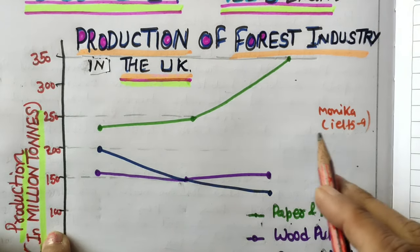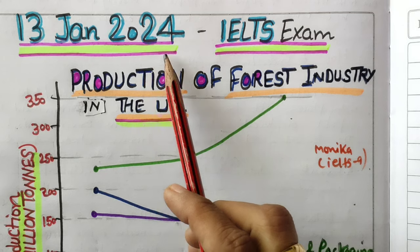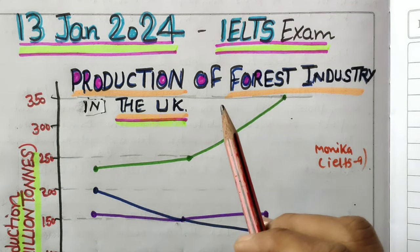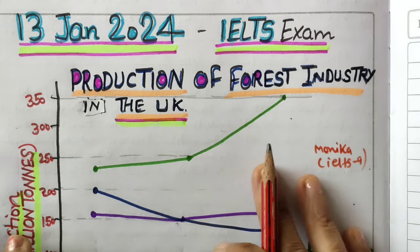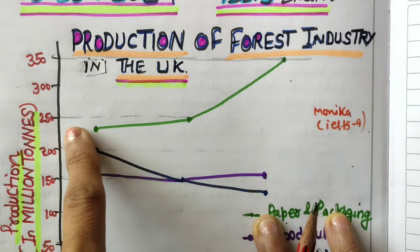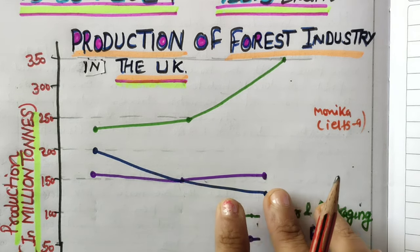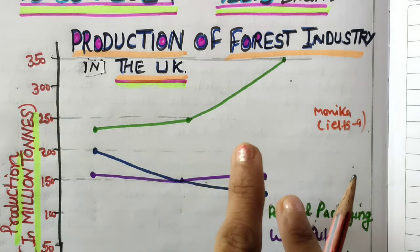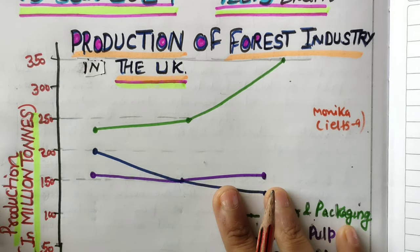Hello everyone, I am Monica from IELTS 9. This writing task 1 question was part of the January 13, 2024 IELTS exam in India. This line graph question can be repeated in neighboring countries, Gulf countries, Canada, the US, the UK, or anywhere. You need to know what vocabulary to use and how to plan writing task 1. I will explain it in a simple story form.